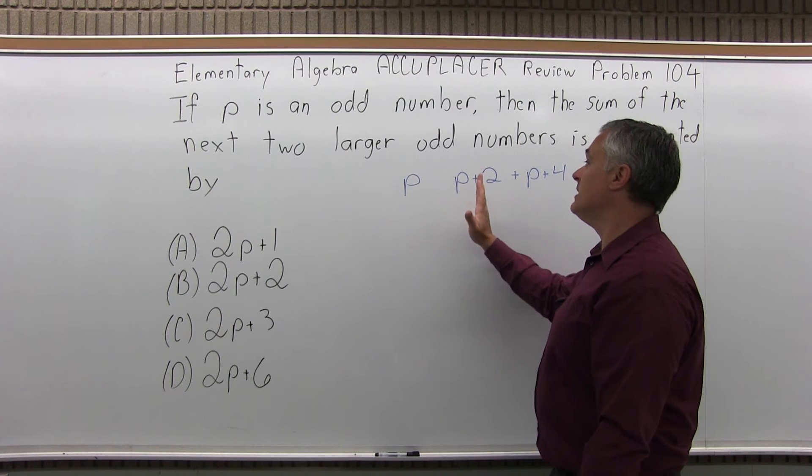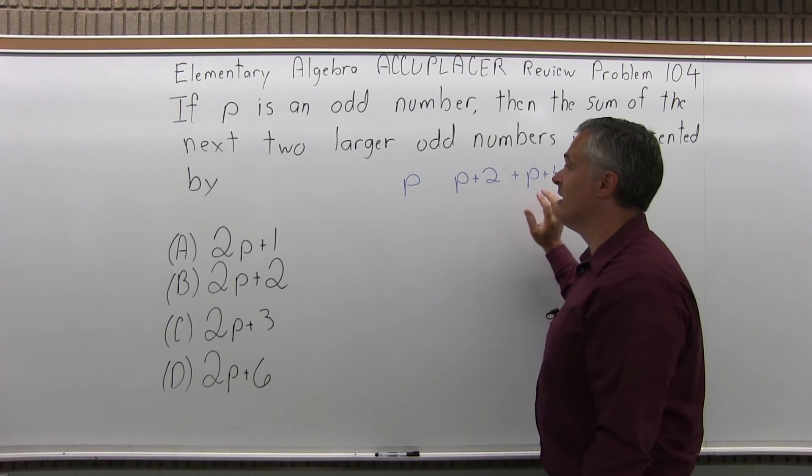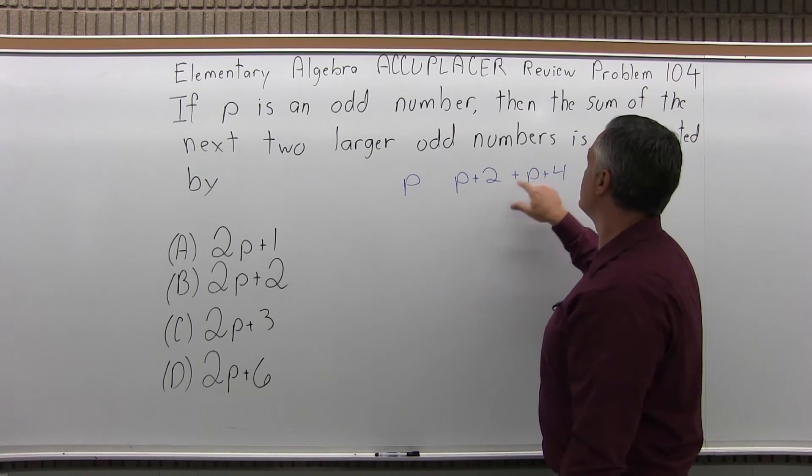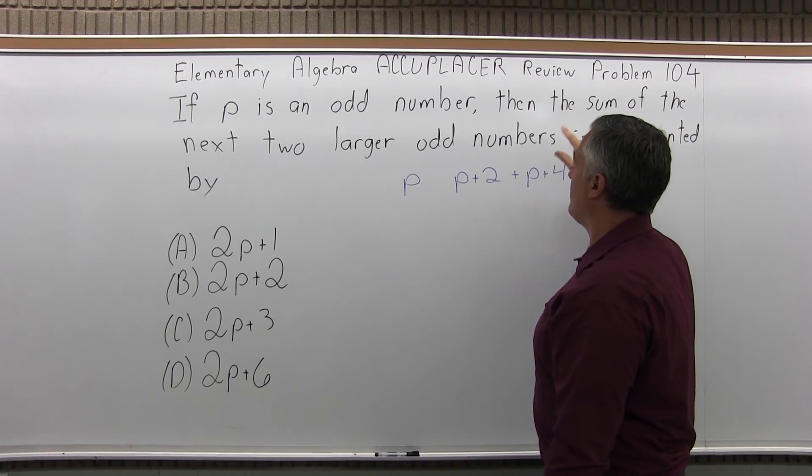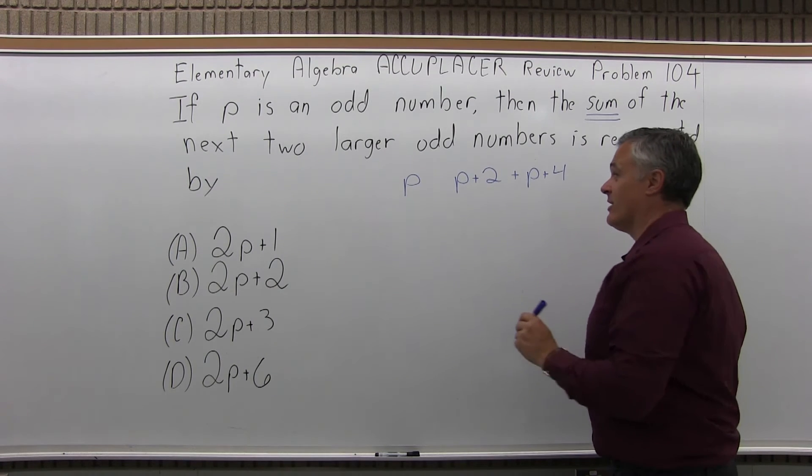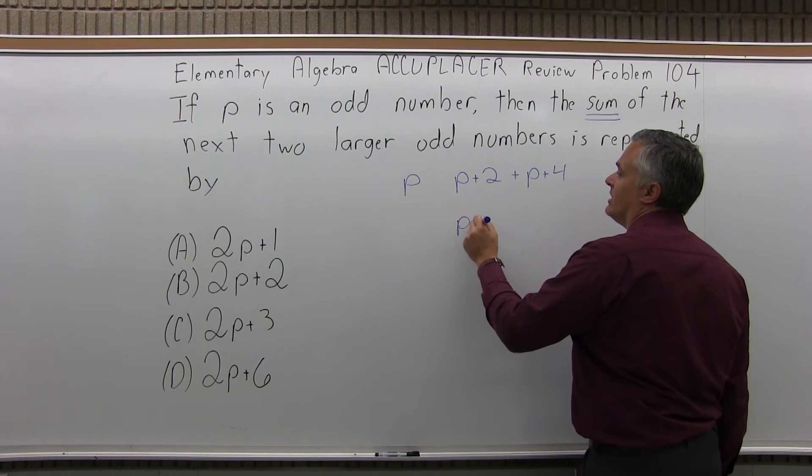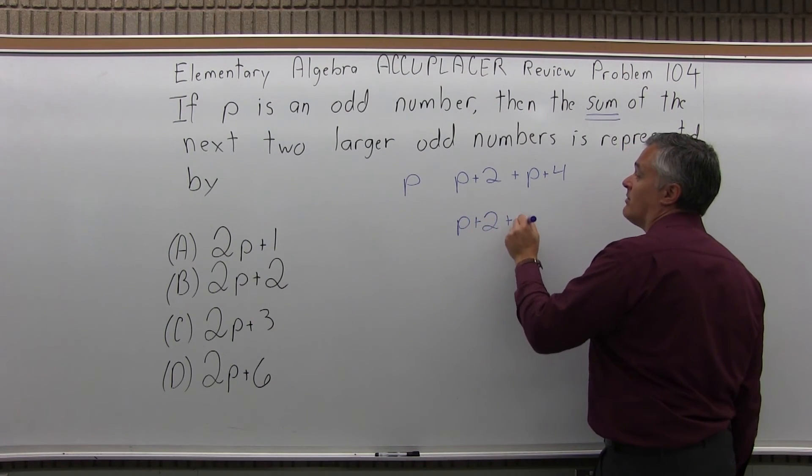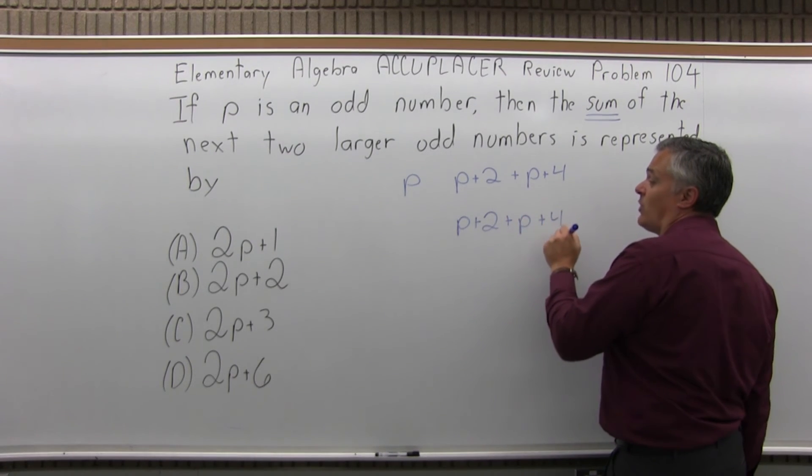If you start with P, P plus two is the next one. P plus four is the one after that. Now, what they ask is the sum of the next two larger numbers. Sum means add things together. So, if I add the next two larger odd numbers, I'm going to add P plus two plus P plus four.